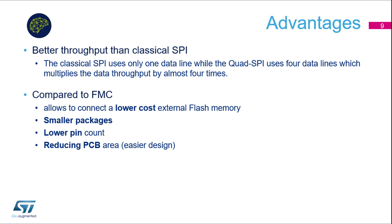If we compare Quad SPI and FMC memories, Quad SPI memories are cheaper with smaller packages because they do not require as many pins, and this can reduce PCB area and developer effort as well.